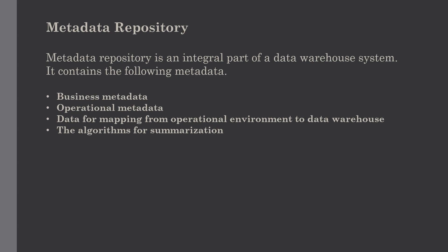Our next topic is the metadata repository. The metadata repository is nothing but an integral part of a data warehouse system. It contains the following types of metadata. The first one is business metadata, which contains data ownership information, business definitions, and change policies.